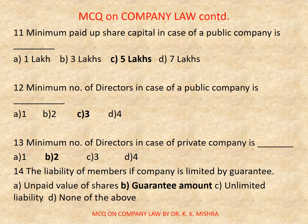Question number 13: Minimum number of directors in case of a private company is — Options are: A) 1, B) 2, C) 3, D) 4. Correct option is B, 2.